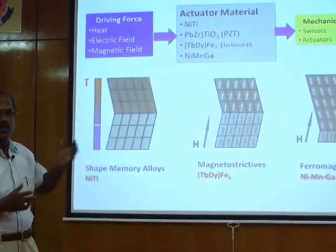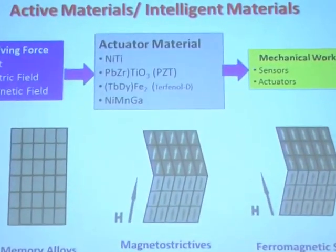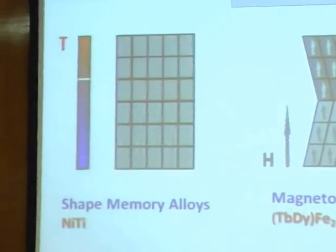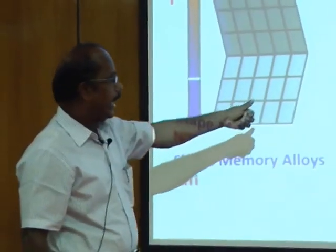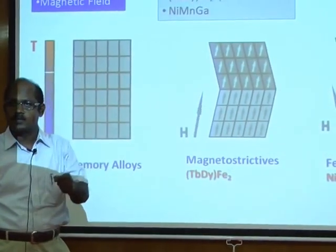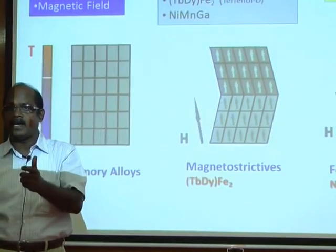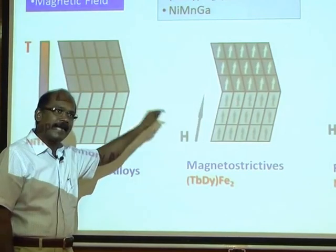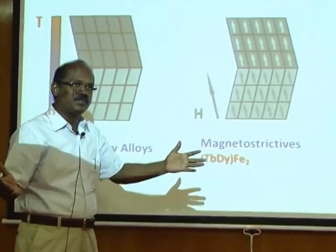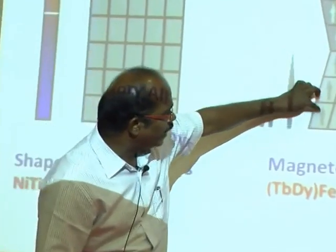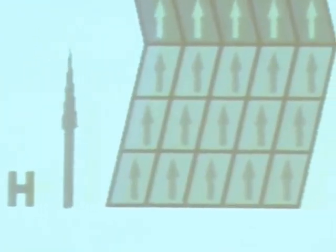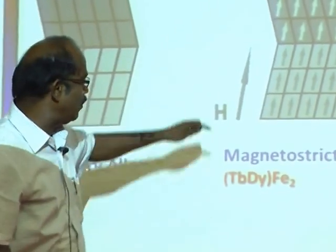Here is a pictorial representation of the difference between conventional shape memory alloy and ferromagnetic shape memory alloy. In conventional shape memory alloy, temperature is applied and the shape changes. Strain is the important parameter to fabricate sensors and actuators. However, in the case of Terfenol, the strain produced is only 0.2%. In any ferromagnetic material, domain walls are present and the magnetic moment rotates within the domain — as a result, only 0.2% strain is produced, which is too low for constructive applications.